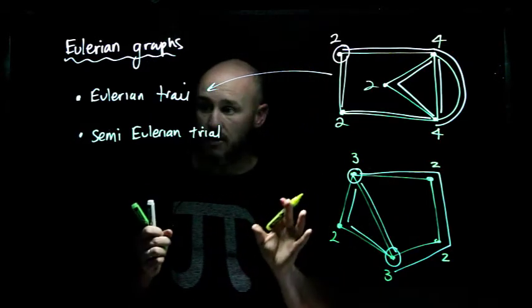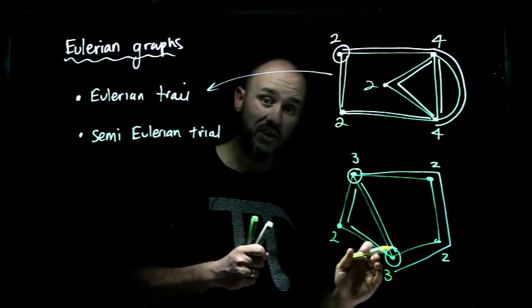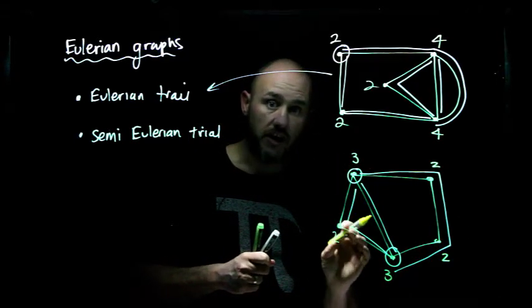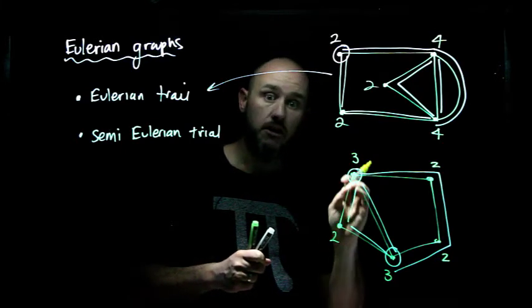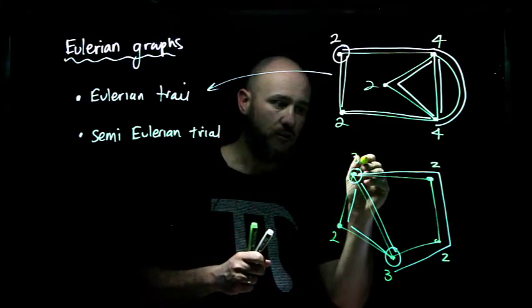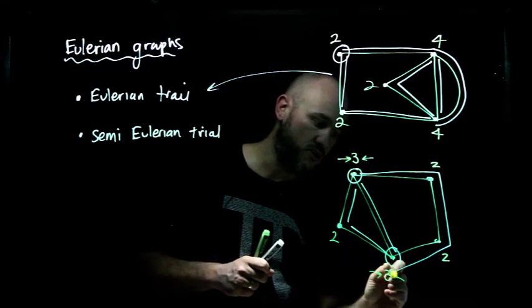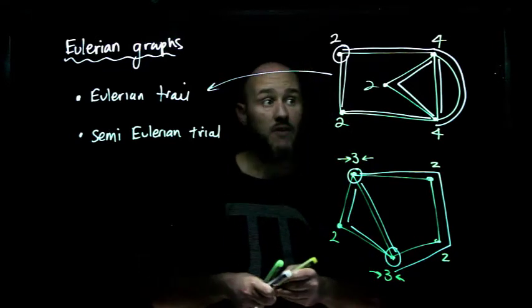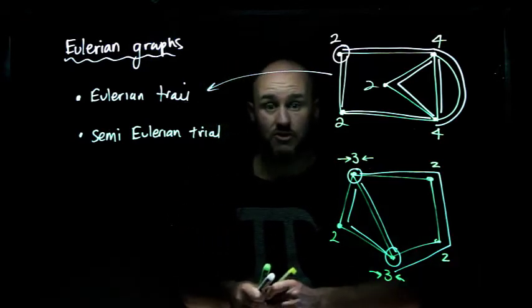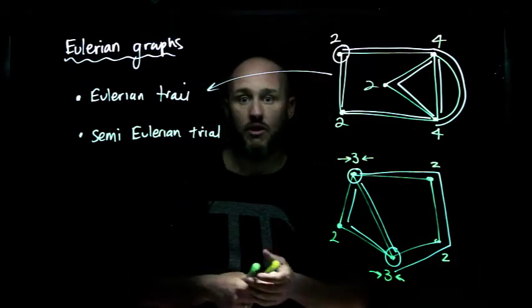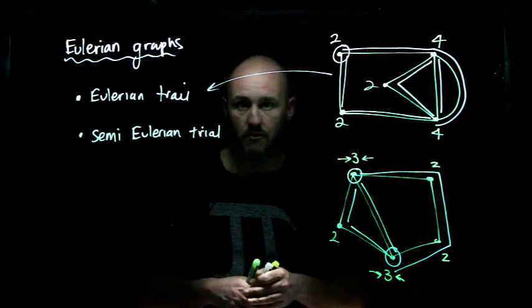So, to make it semi-Eulerian, there needs to be two odd number vertices, and the rest have to be even. That's how we get semi-Eulerian. And the trail has to start at one of the odd number ones and finish at the other. Otherwise, you just can't complete the edges. If you have a graph that's got four odd number edges or six odd number edges, then we can't make a trail around in such a way that all the edges are covered.